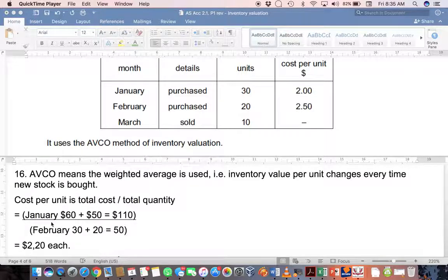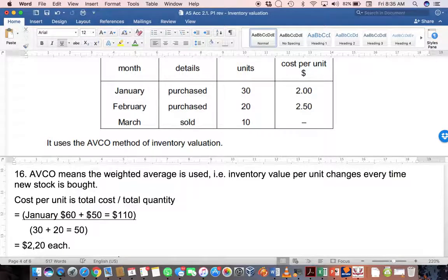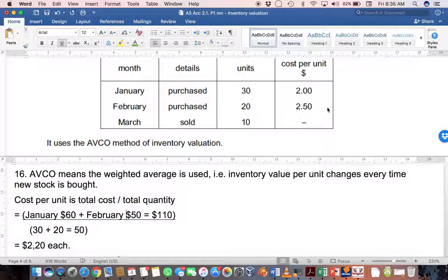January $60 plus February $50 - that's 30 times 2 gives you 60, and 20 times $2.50 gives you $50, for a total value of $110. Your total quantity is the 30 from January and 20 from February, which gives you 50 units. So the total value of stock is $110, the total quantity is 50, and therefore the average value must be $2.20.